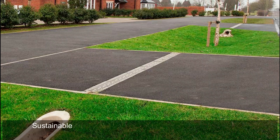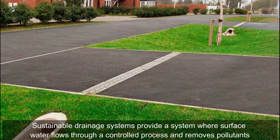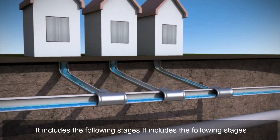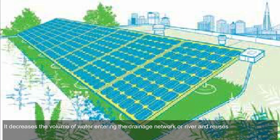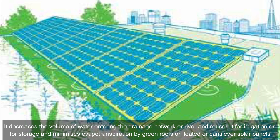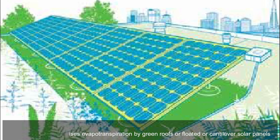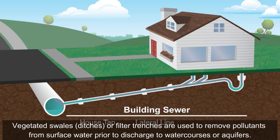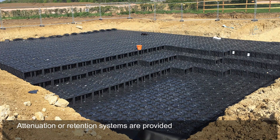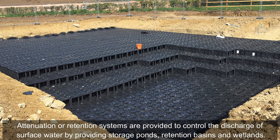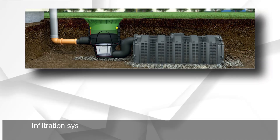Sustainable drainage systems (SuDS) provide a system where surface water flows through a controlled process and removes pollutants. SuDS decreases the volume of water entering the drainage network or river and reuses it for irrigation or storage. It also minimizes evapotranspiration through green roofs or solar panels. Vegetated swales, ditches, or filter trenches remove pollutants from surface water prior to discharge to watercourses or aquifers. Attenuation or retention systems control discharge of surface water using storage ponds, retention basins, and wetlands.